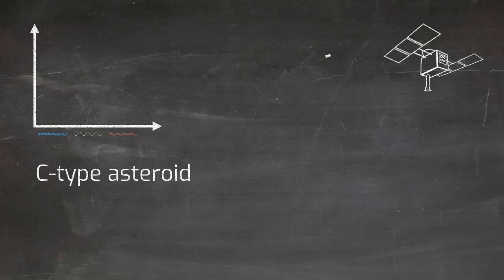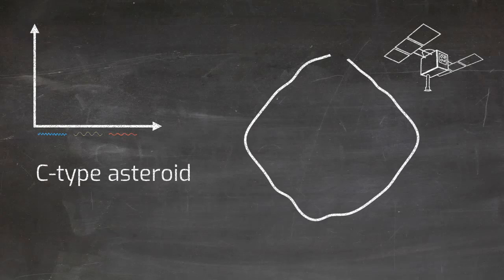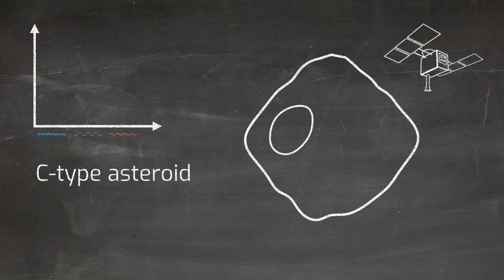C-type asteroids, such as Ryugu, which was visited by the Hayabusa 2 mission, are darker asteroids than S-type with low albedos. The typical spectrum is red but flatter and featureless compared to S-type.